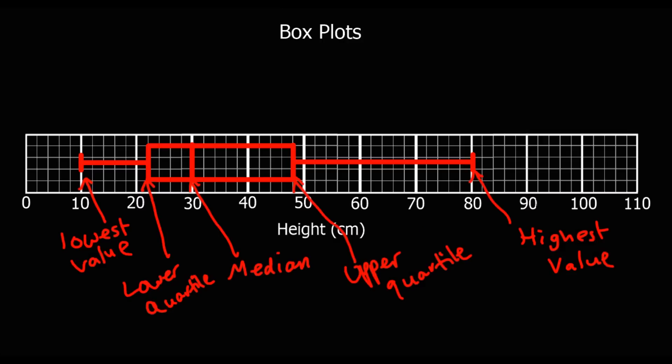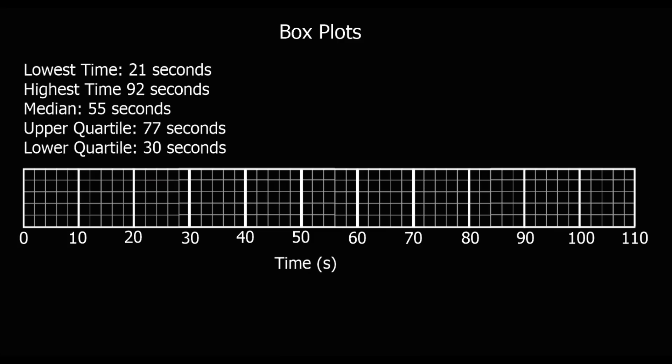And then we should be able to draw them. So here's time. We've got lowest time, highest time, median, upper quartile, lower quartile. So that's all the information we need. So the lowest time, 21 seconds. So we use that. And we put a line there at 21 seconds. Use a ruler if you can.